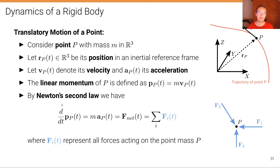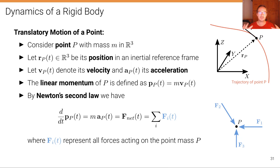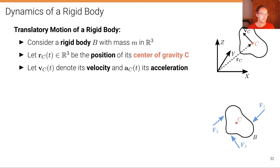By Newton's second law — this is where dynamics comes into play — the time derivative of the linear momentum of that point at time t equals the mass times the acceleration at time t, and that equals the net forces acting on that point mass p. The sum of all forces, the net force, is equal to m times a. That's Newton's second law — a very famous law in physics.